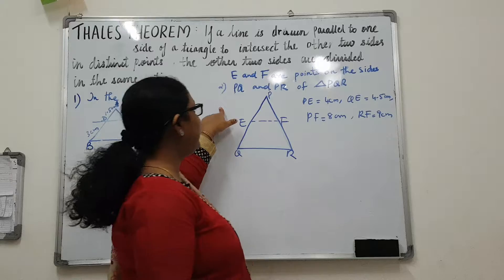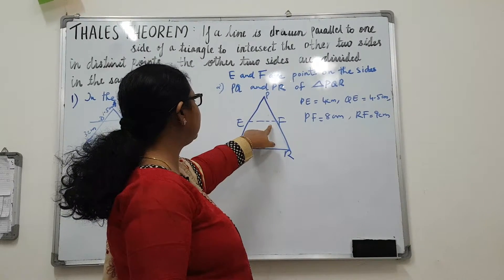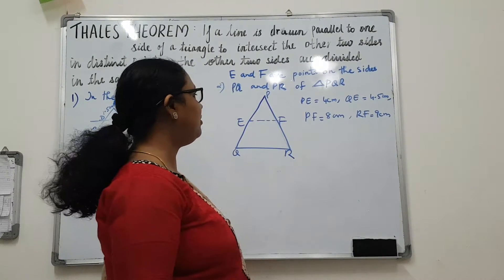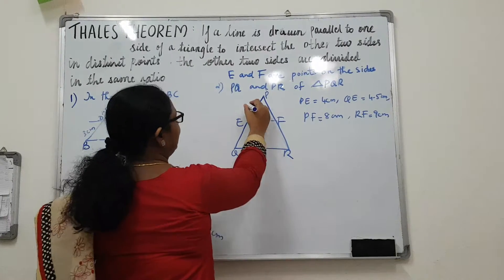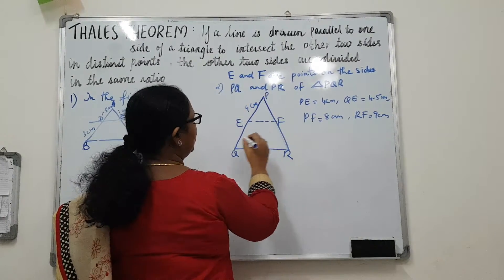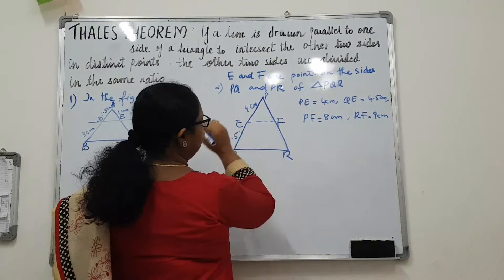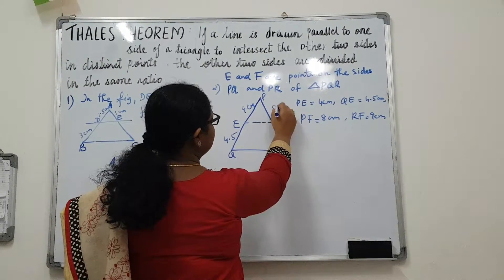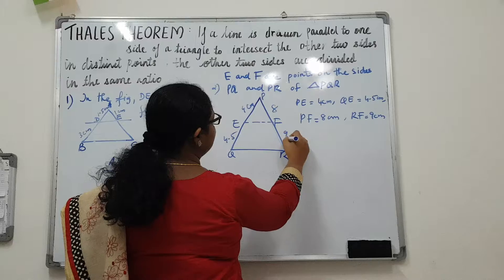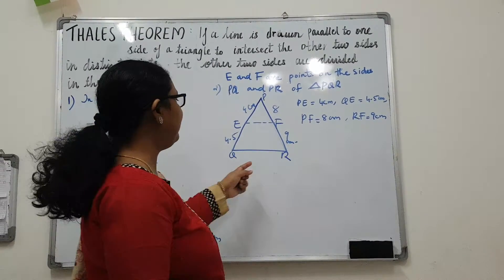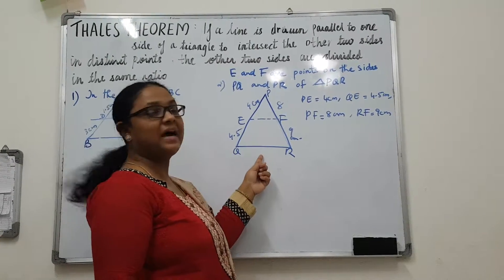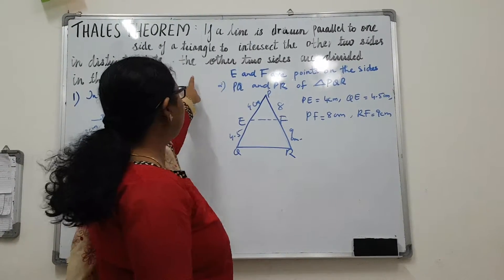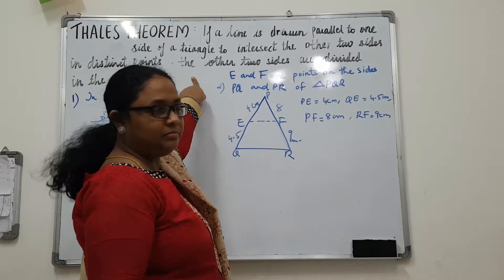Now in the next question, E and F are points on the sides PQ and PR of triangle PQR. Given that PE is 4 cm, QE is 4.5 cm, PF is 8 cm, and RF is 9 cm. So in this question, we have to check whether EF is parallel to QR. So it is actually the converse of BPT.